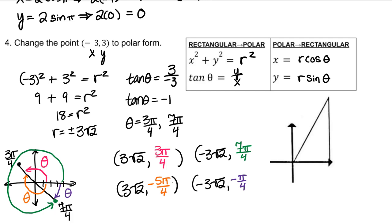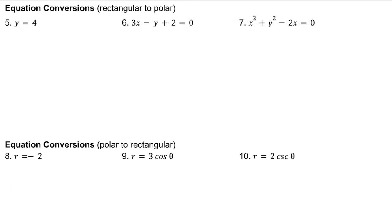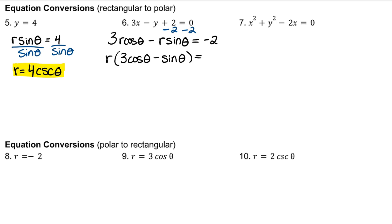Let's convert rectangular equations into polar form. Remember that y is equal to r sine theta. Solve for r if possible. Using the reciprocal identity, 1 over sine theta will be cosecant theta. For number 6, I will replace x with r cosine theta and y with r sine theta. Factor out r. And then solve for r.